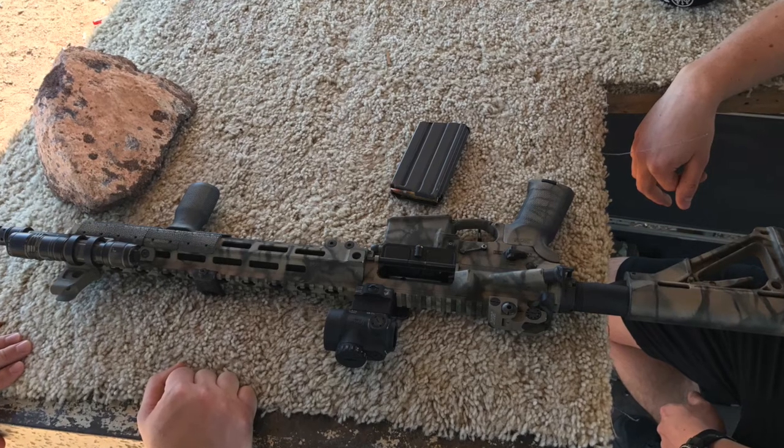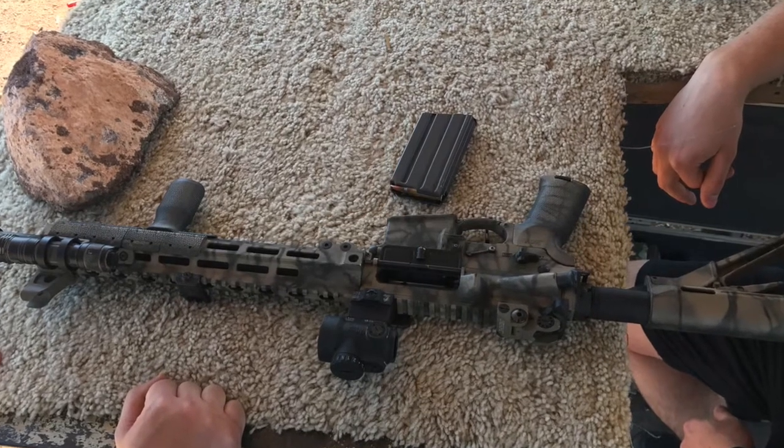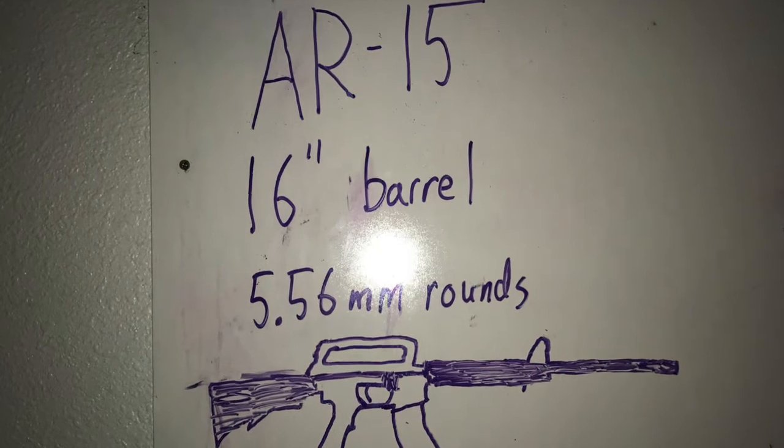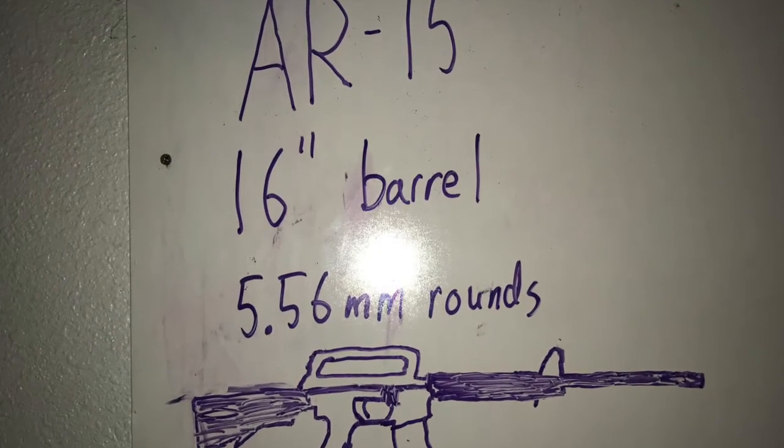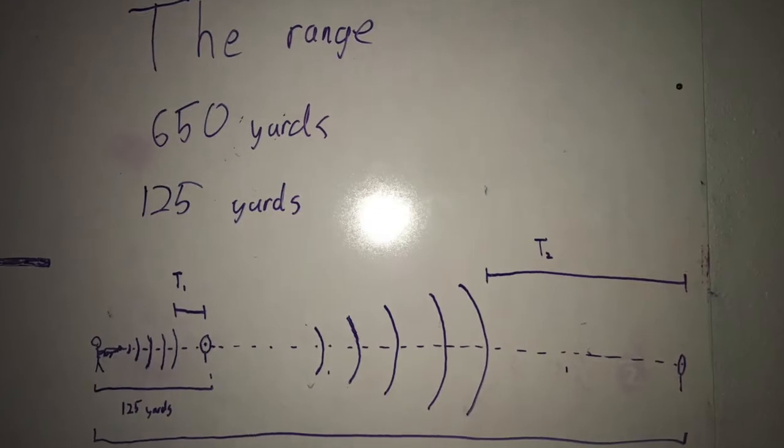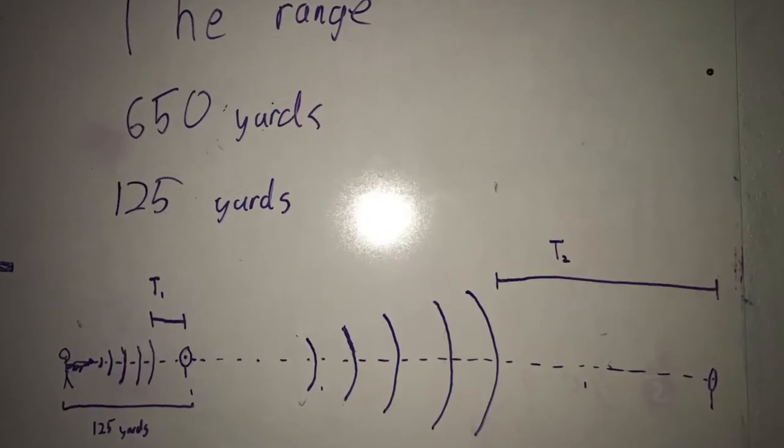In this presentation we will compare the velocity of sound to the velocity of a bullet hitting a steel target. For this experiment we used an AR-15 rifle shooting 5.56mm ammunition at steel targets placed at ranges of 650 yards and 125 yards.